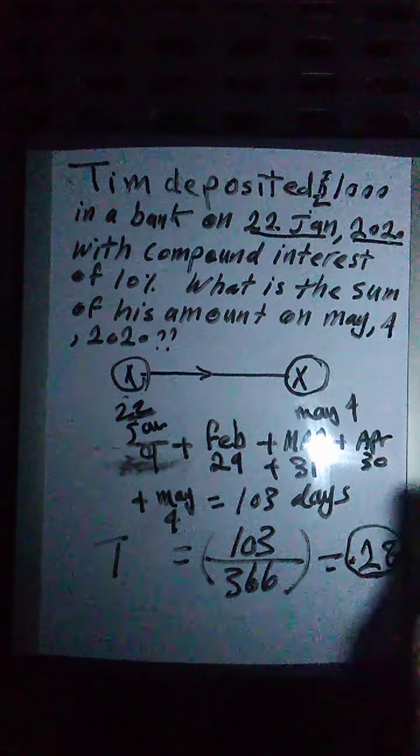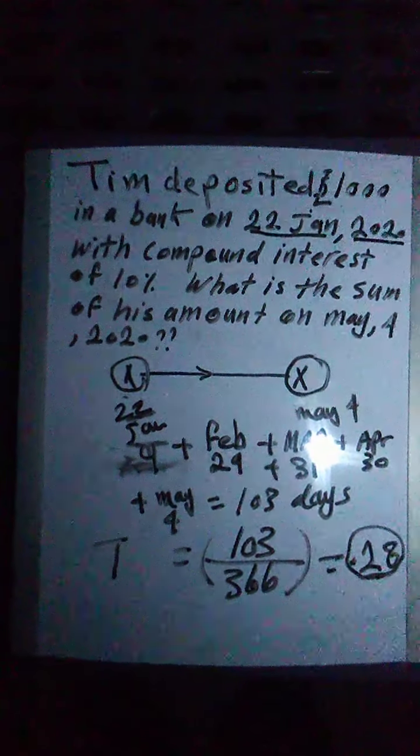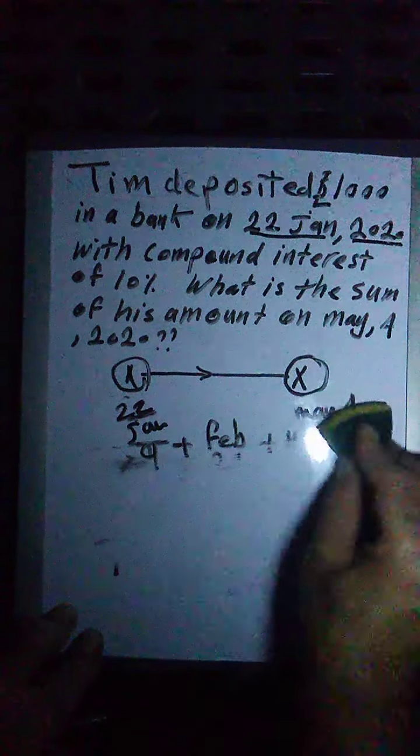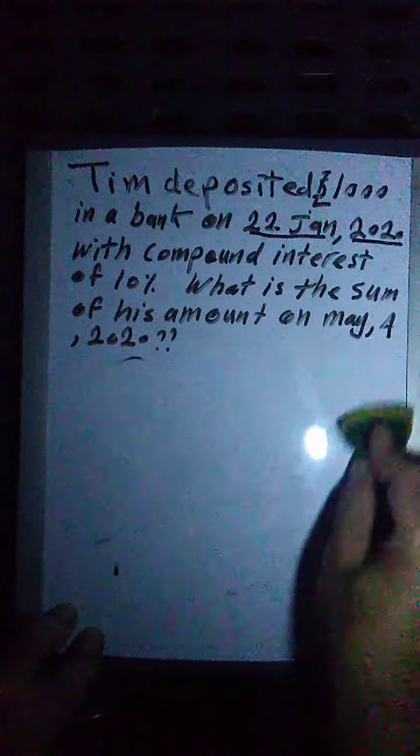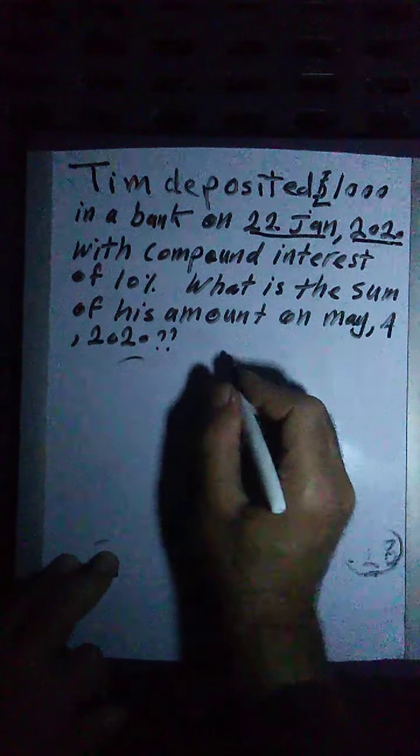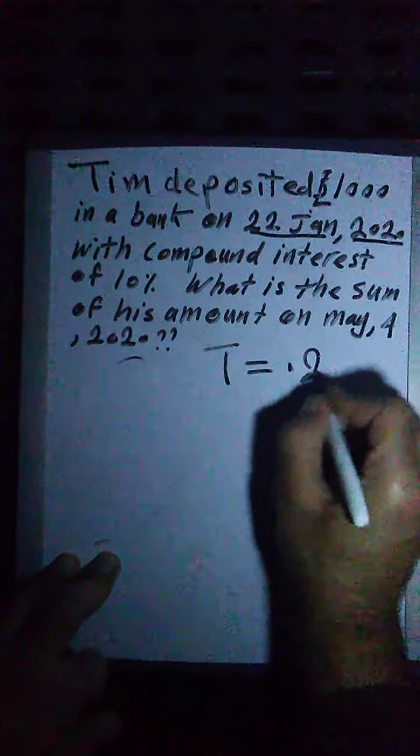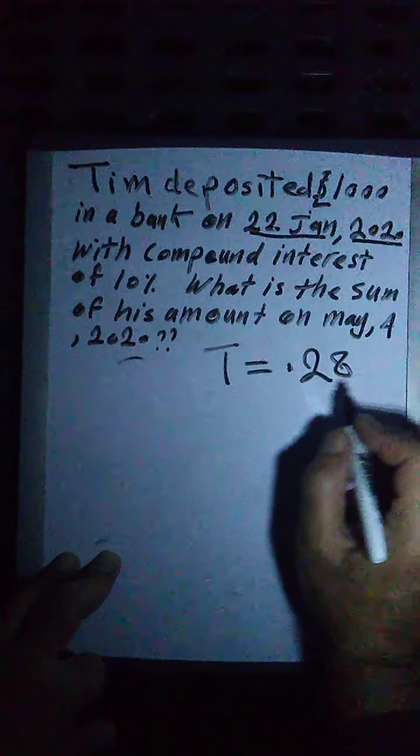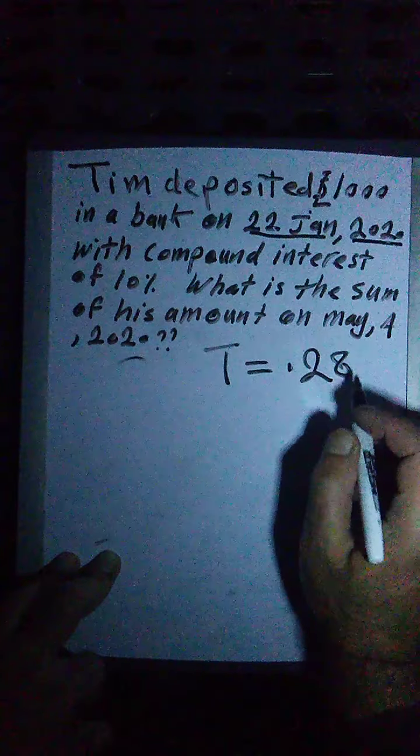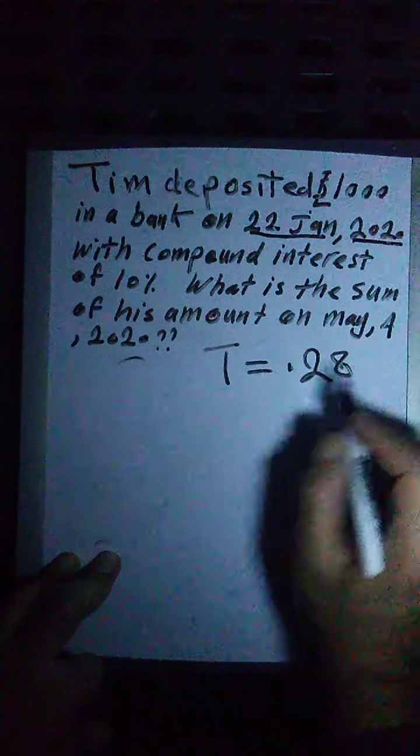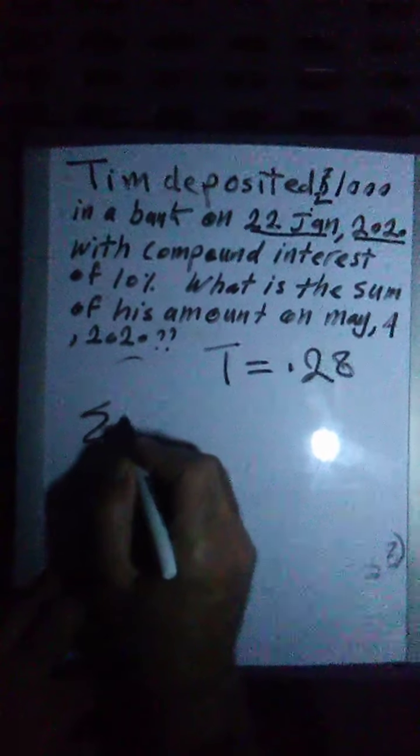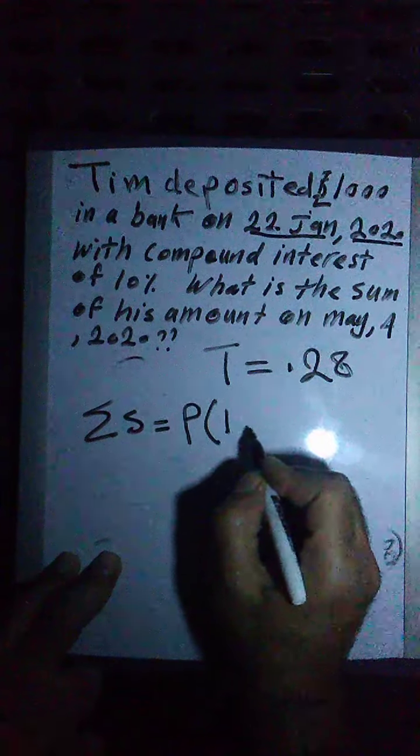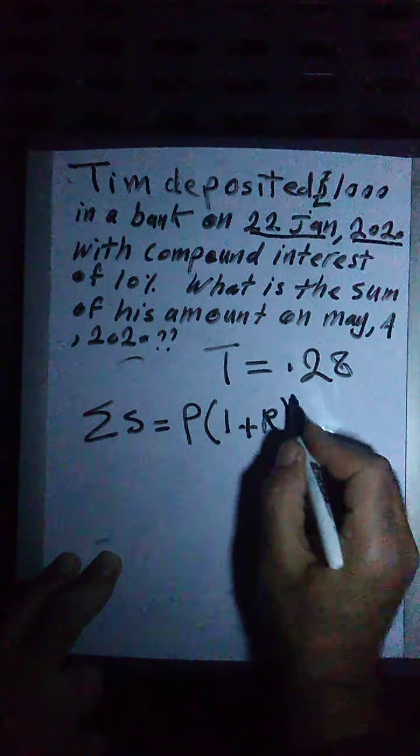Let me now go back to the example. We know now that the T is 0.28. And we know how to calculate the days. Our T is 0.28. Some students will take more than two digits after the decimal point. That's fine. So now I will say the sum of this amount will be the principal multiplied by 1 plus R power T. Why I did this? Because it's a compound interest.